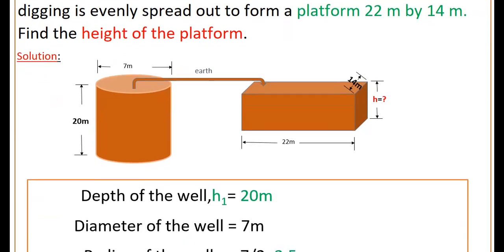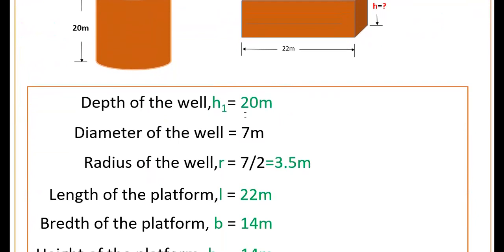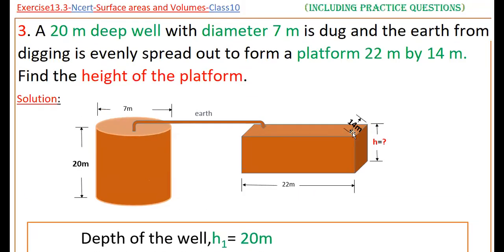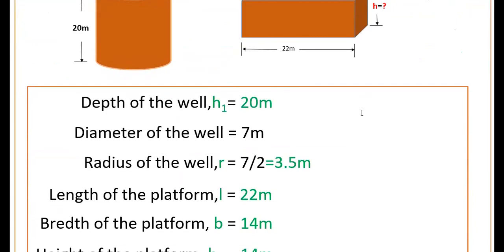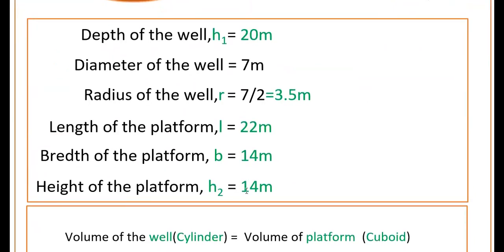Write the given values: depth of the well h1 is equal to 20 meters, and diameter of the well is 7 meters. Therefore radius of the well r is equal to 7 by 2, that is 3.5 meters. Length of the platform l is equal to 22 meters, breadth of the platform is 14 meters, and height of the platform h2 is what we have to find.